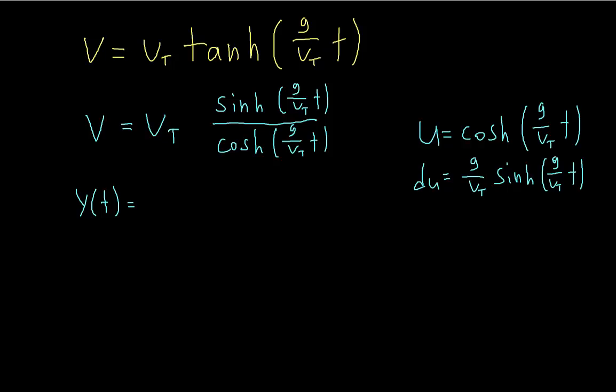And so our final answer is going to be vt squared over g times the ln of hyperbolic cosine of g over vt times t. And then add the c at the end. But if we make the initial position 0, then the c is going to be equal to 0.